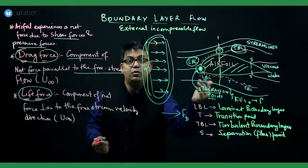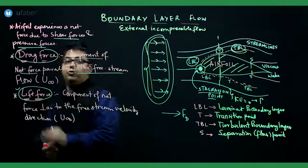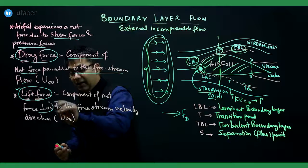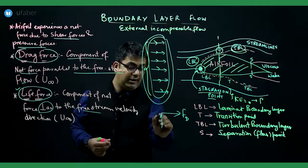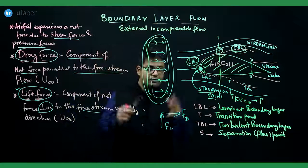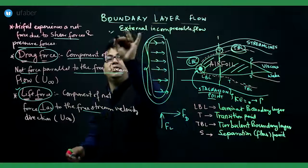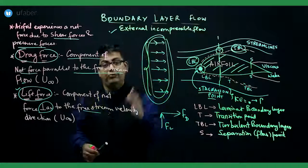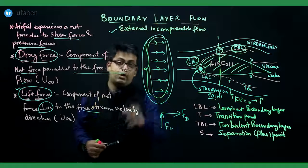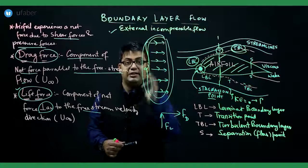The lift force is the component of the net force which acts perpendicular to the free stream velocity. This is how the concept of boundary layer flow links to external incompressible fluid flow over a body in an unbounded fluid. Having covered the basic concept of boundary layer flow, we will now move on to discuss boundary layer thicknesses.